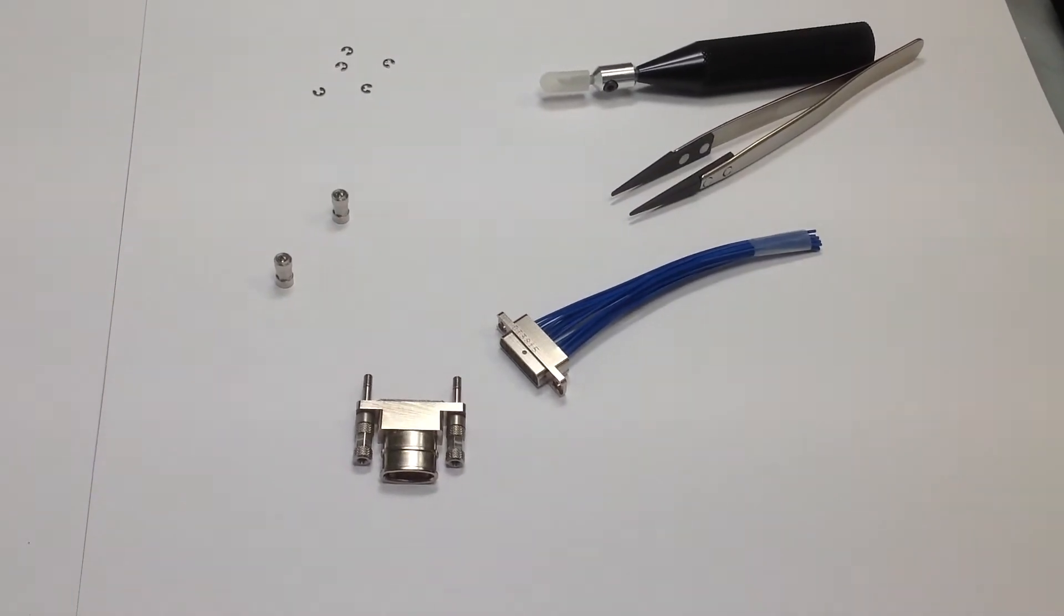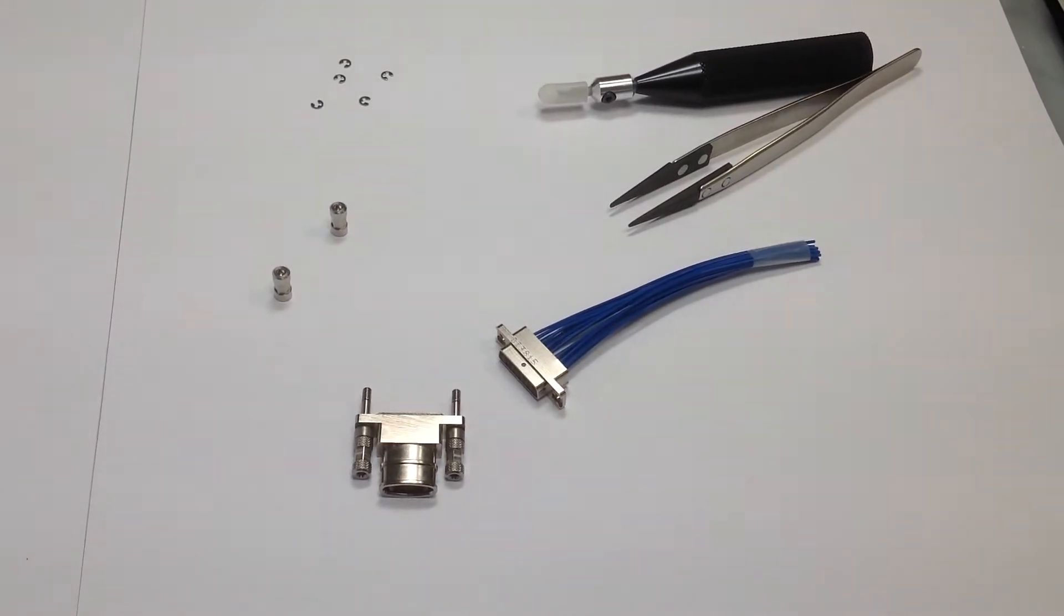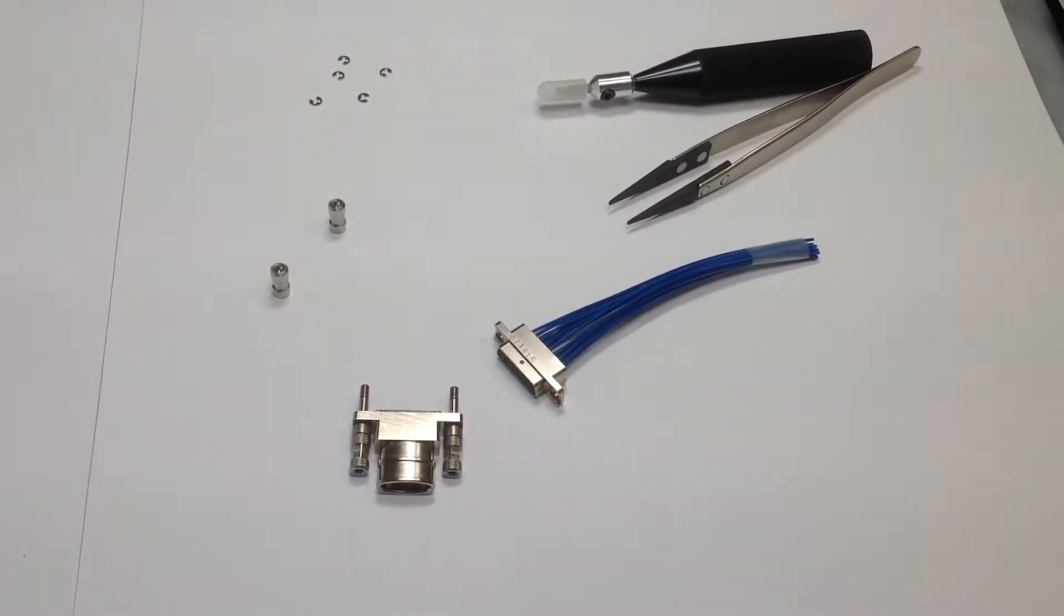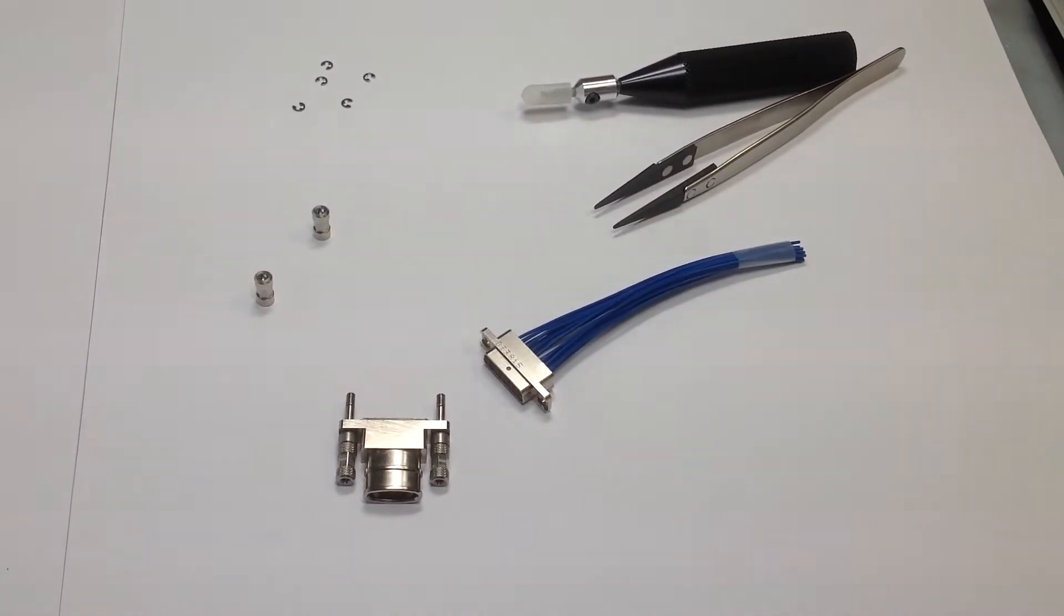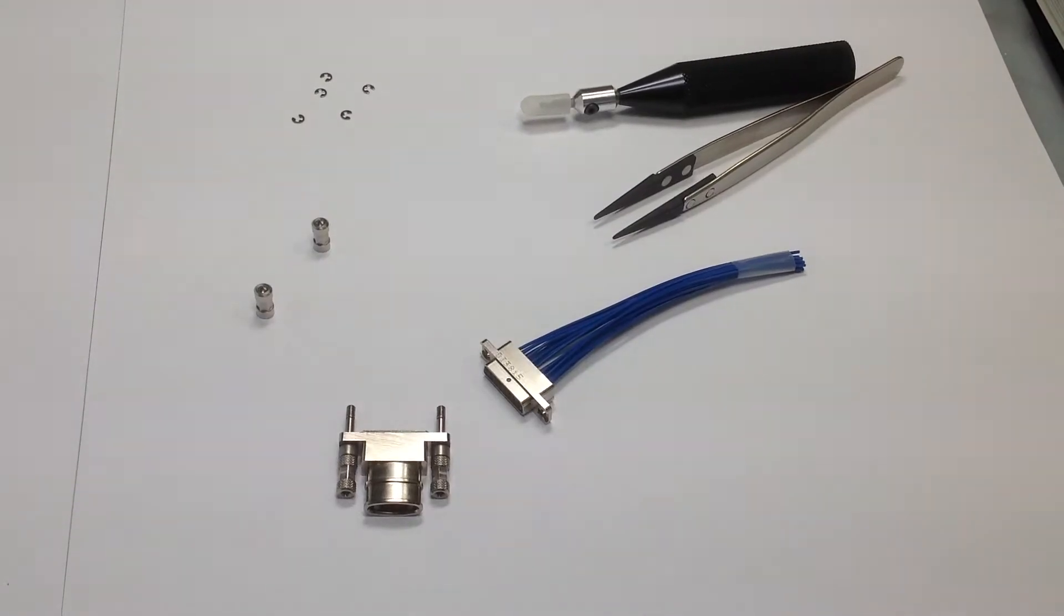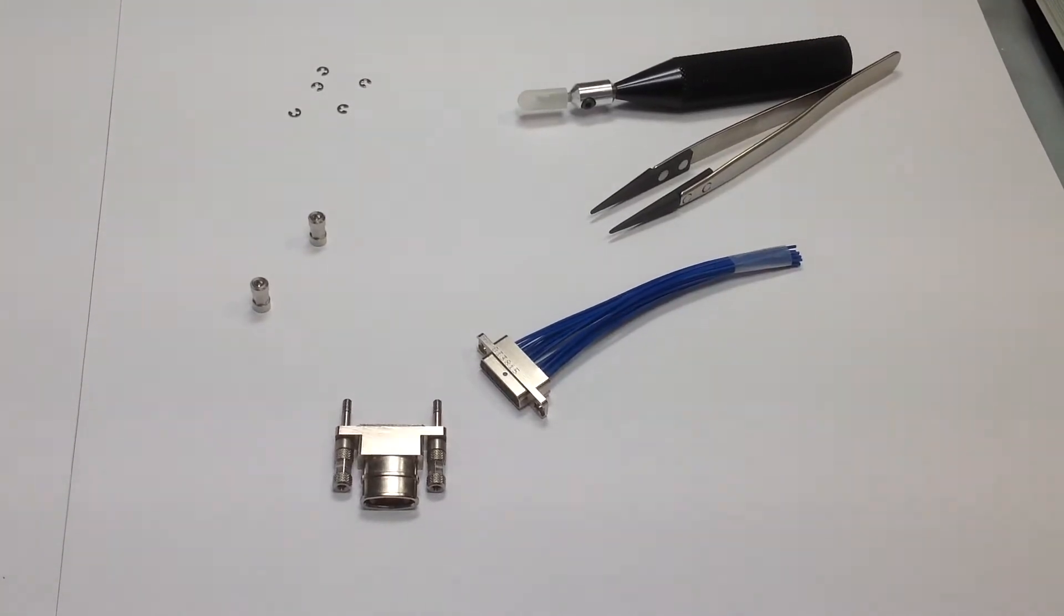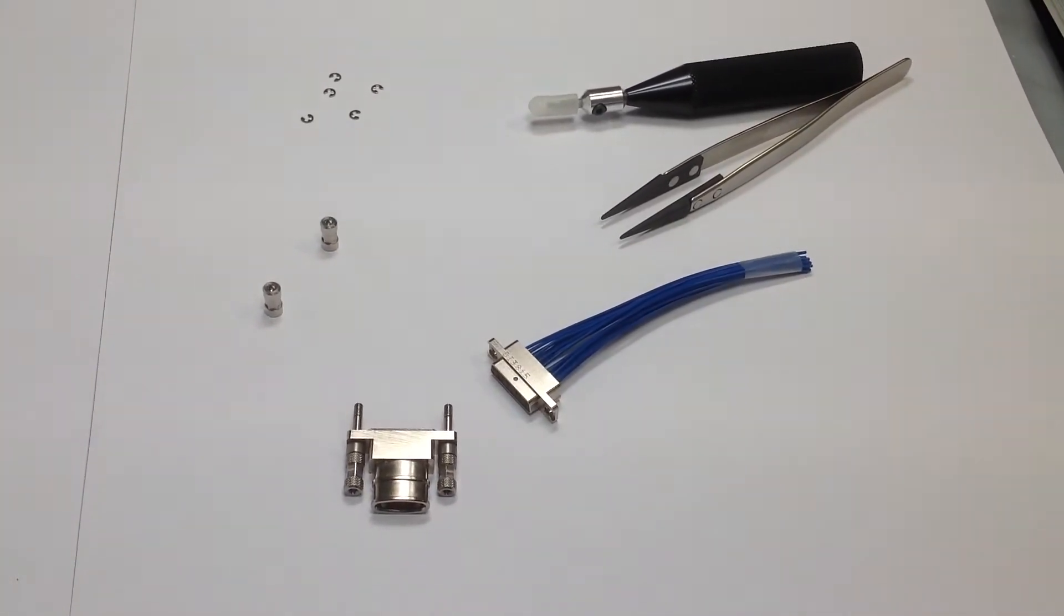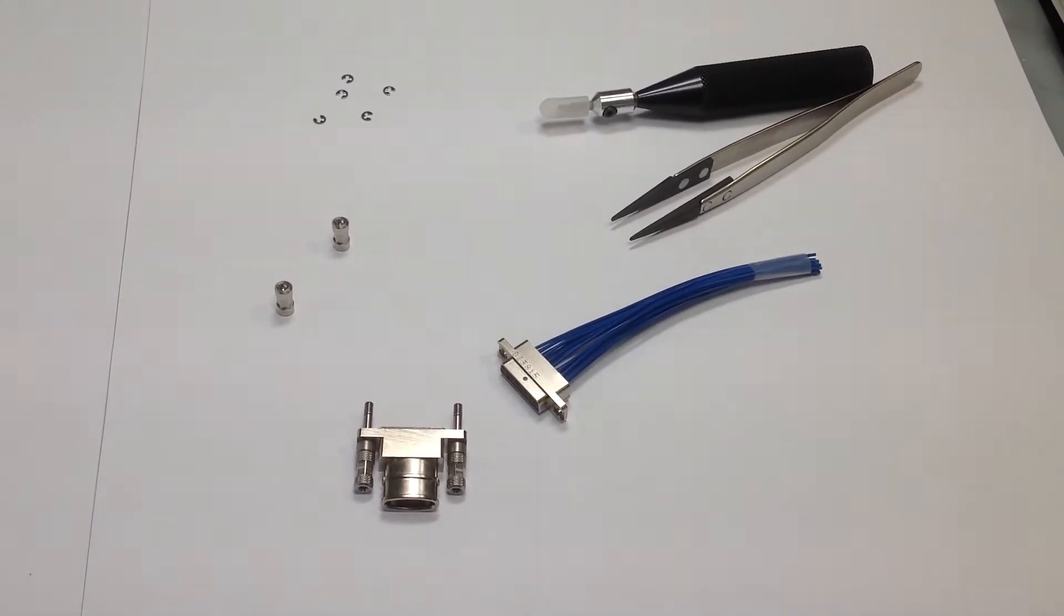Hello, so we are going to demonstrate how to position our back shells onto the GMM connectors. For this you have everything on the table which is a special tool made for this, the connector itself, the cable, the back shell, the pre-mounting screws and the clips. So let's first see how to mount the back shell onto the connector.